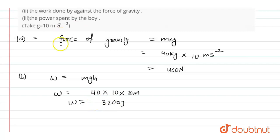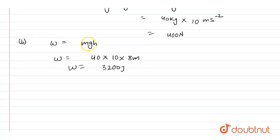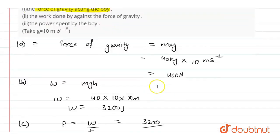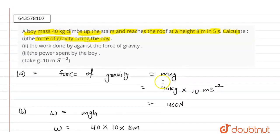In the third part we have to calculate the power spent by the body. So we know power is the rate of doing work, which means work upon time. So work done is 3200 divided by time. Time taken by the boy is 5 seconds.